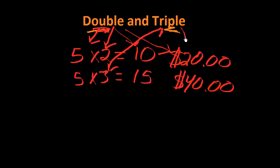If you triple 20 dollars, then you will have 60 dollars. So triple is by 3, double is by 2.